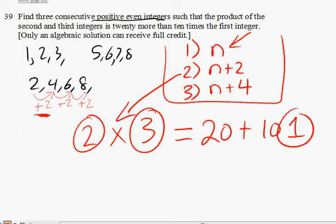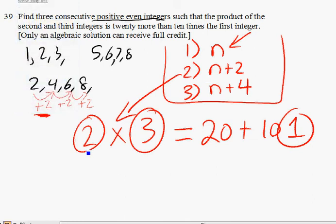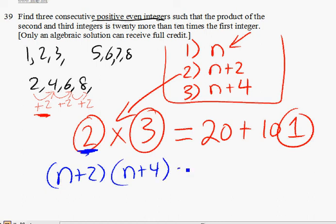So let's plug these in with the actual variables here. Well, the second number is n plus 2, so it's going to be n plus 2. I'm just getting that from my legend. The third number is n plus 4, n plus 4, and that's equivalent to 20 plus 10 times the first number, which is n.